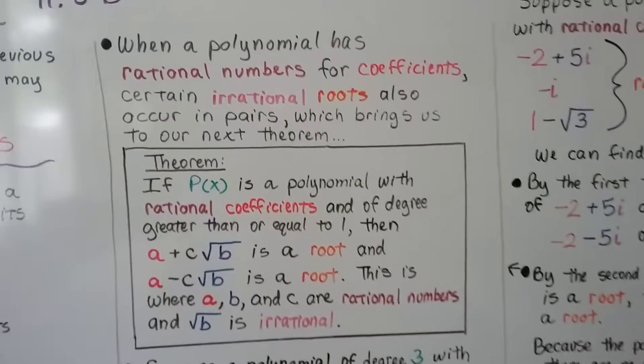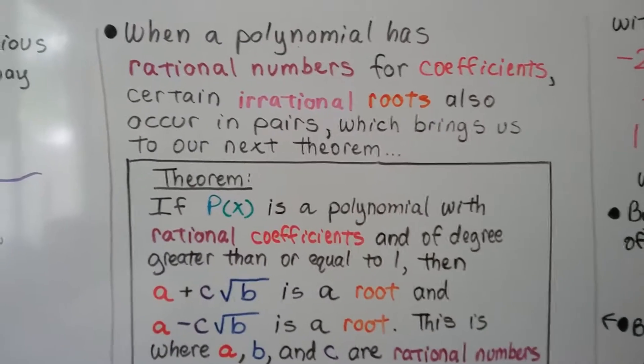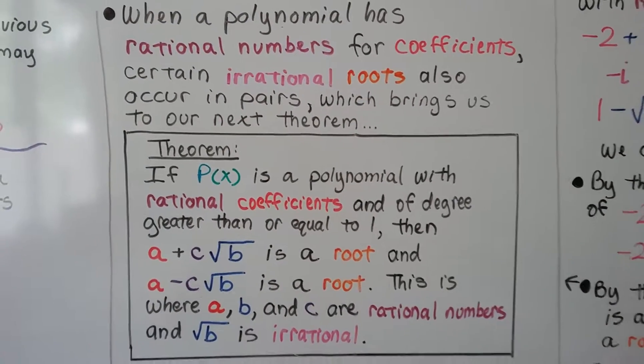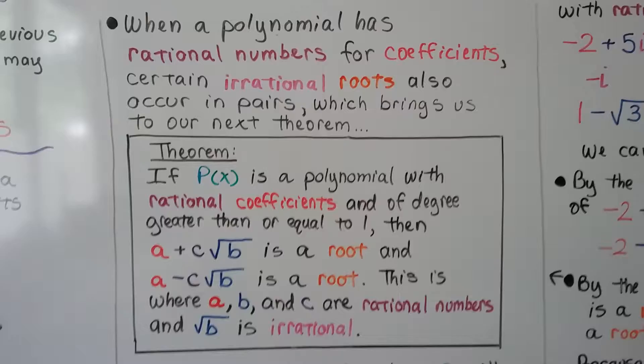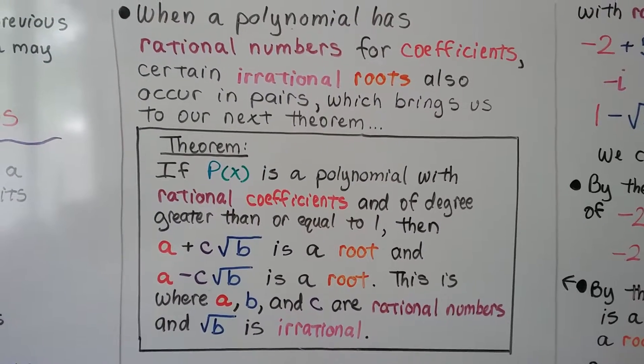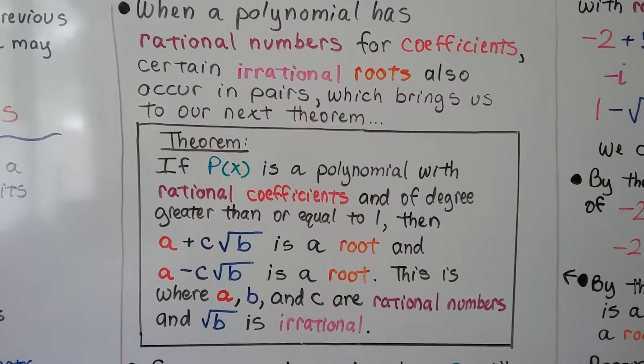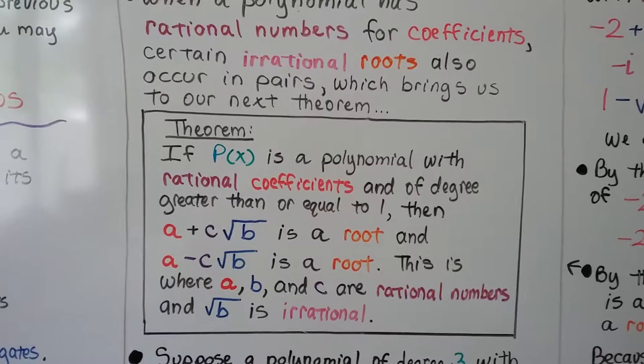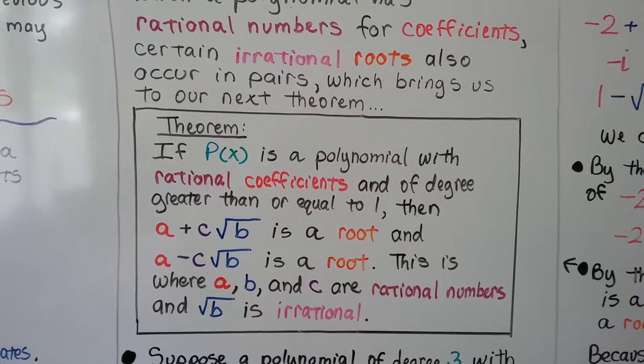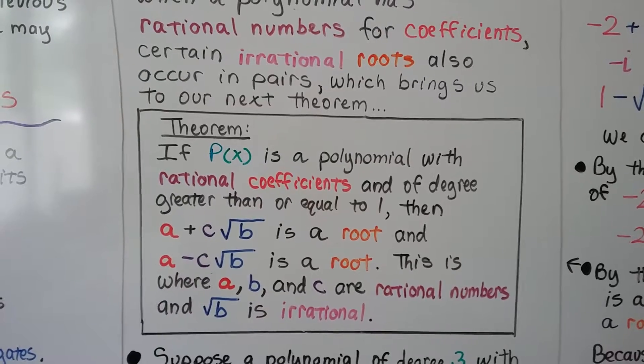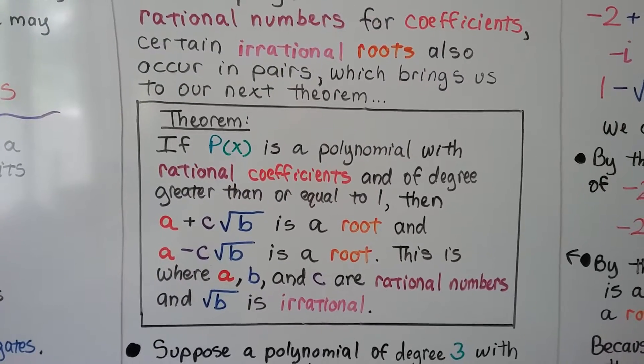When a polynomial has rational numbers for coefficients, certain irrational roots also occur in pairs, which brings us to our next theorem. If p of x is a polynomial with rational coefficients and of degree greater than or equal to 1, then a plus c times the square root of b is a root, and a minus c times the square root of b is a root. This is where a, b, and c are rational numbers, and the square root of b is irrational.